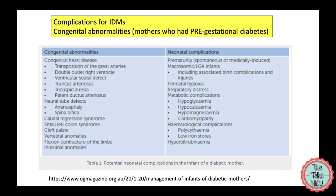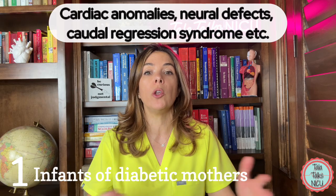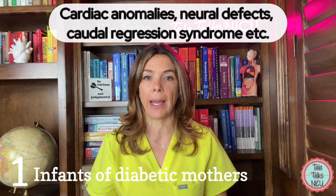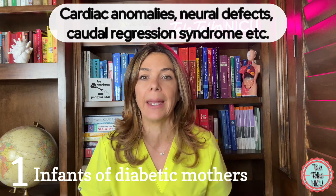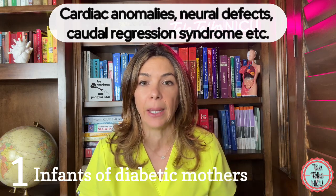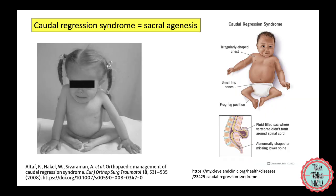Things like cardiac issues — like a VSD, ASD, a TGA (transposition of the great arteries) — or neural issues like a spinal cord defect, or even anencephaly, or a very rare outcome, caudal regression syndrome.